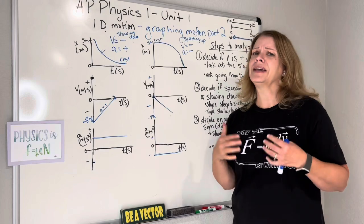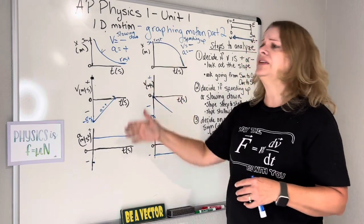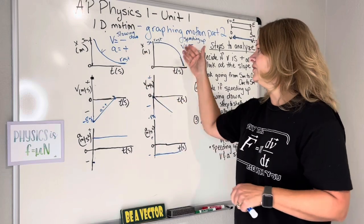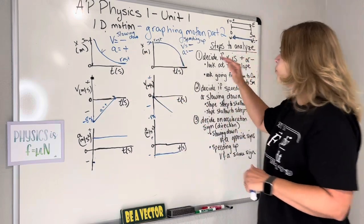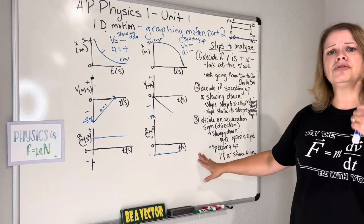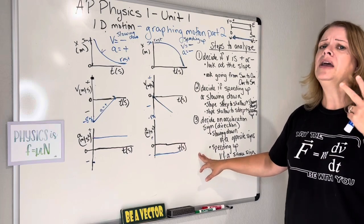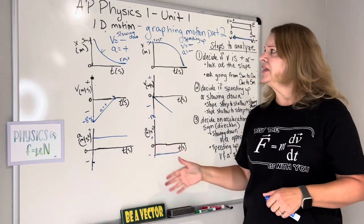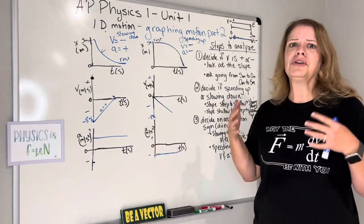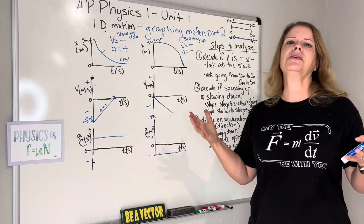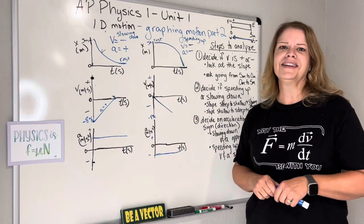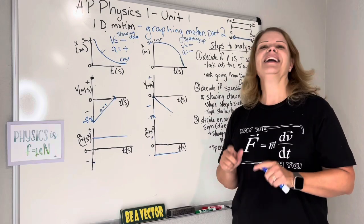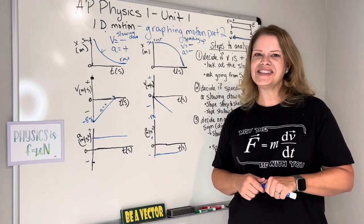I hope that helps in analyzing these graphs. Memorizing these curves is not a good technique. Remember these three steps: get your velocity sign, determine speeding up or slowing down, and get your acceleration sign. You can do these every single time. Look at what you can figure out and how great your analytical skills are when you work through this. Keep working at it — I'm proud of you. You're doing great. Thank you for watching and happy physicsing.